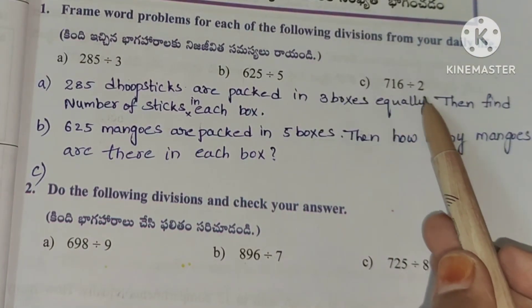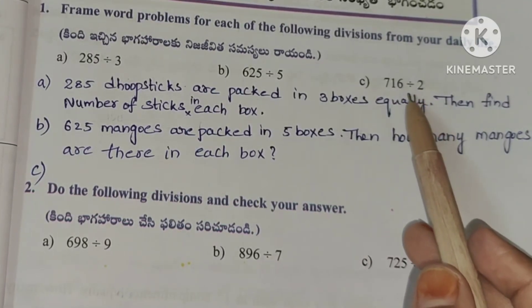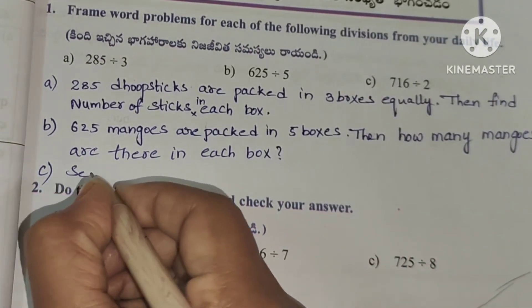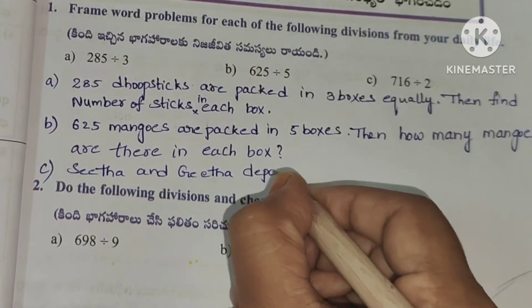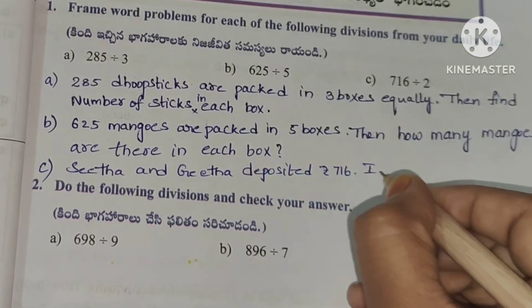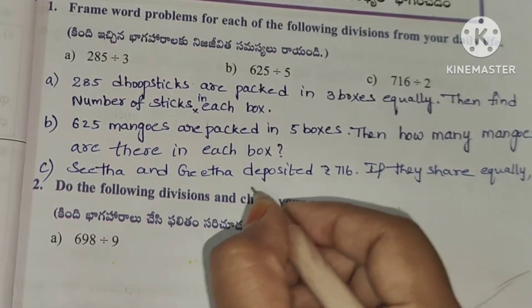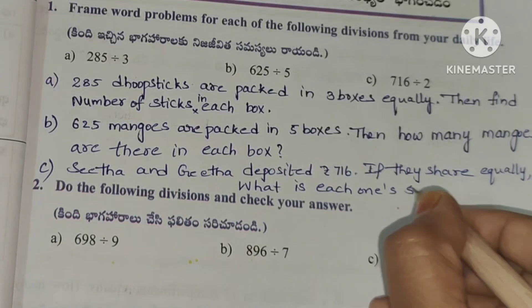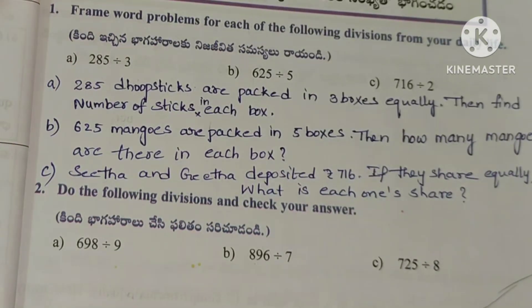Last problem is 716 divided by 2. Two people deposited rupees 716. If they share equally, what is each one's share?